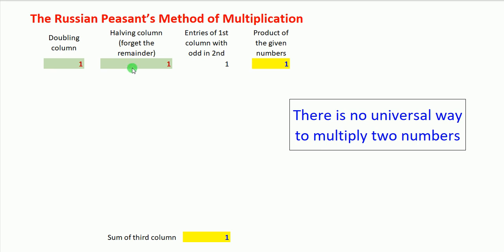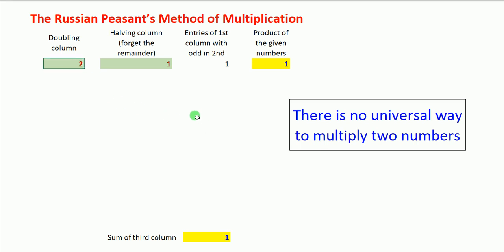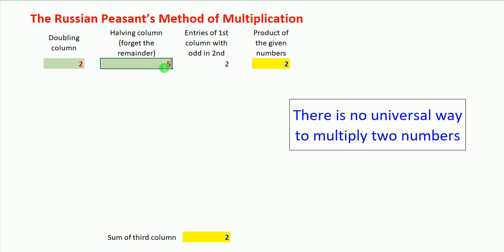Let us start with a simple example: the number 1 in the first column and 1 in the second column. We write entries of the first column which correspond to an odd entry in the second column. Here the second column entry is 1, which is odd, so the first column entry — also 1 — is written. Then 1×1 gives a product of 1. Now let us take another number: 2 in the first column and 2 in the second. Since 2 is even, we don't write anything in the third column.